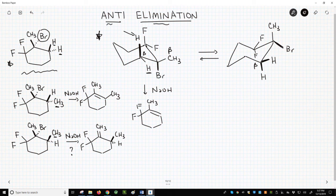A common way to demonstrate this anti-preference is to show eliminations on cyclohexane rings in which the beta-hydrogen and leaving group are both in axial positions to set up the anti-relationship.